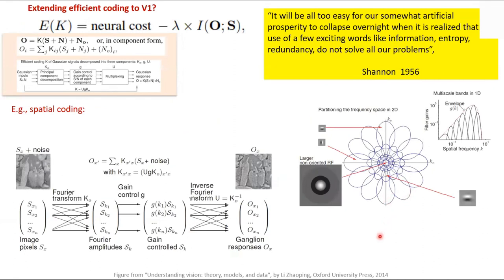Shannon said in 1956 it would be all too easy for our somewhat artificial prosperity to collapse overnight when it's realized that the use of a few exciting words like information, entropy, and redundancy do not solve our problems. Our original idea was: how much can we push efficient coding before we start deleting data? It turns out this approach starts to break down at V1.